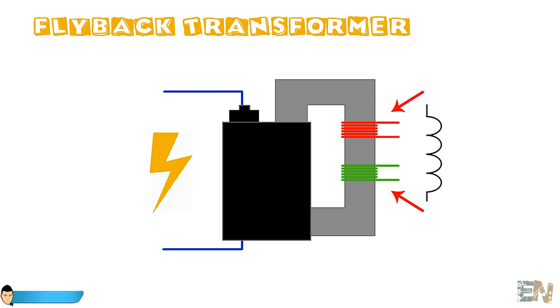So this flyback transformer is like a normal one, but the first coil is split in two. Unlike a normal transformer which operates at 50 or 60 Hz, a flyback transformer is designed to operate at high frequency, so we cannot simply connect the primary coil of the flyback to a normal power supply. Instead, we need a circuit to generate a high frequency input to the primary coil.